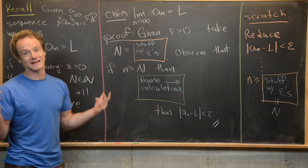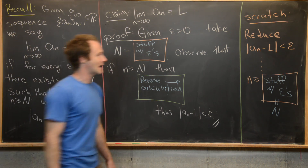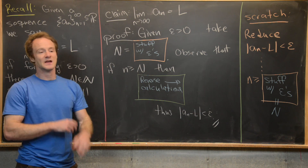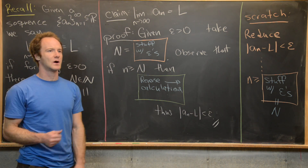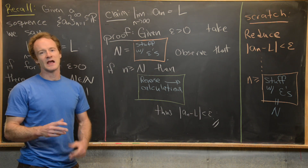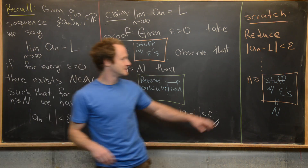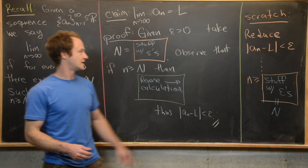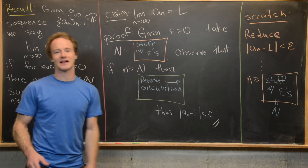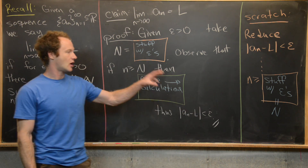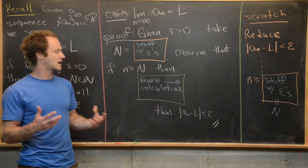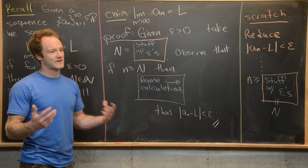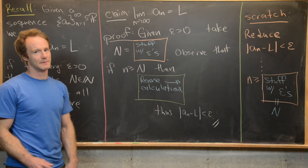The scratch work involves calculating your capital N value. You start with your goal inequality — the absolute value of a_n minus L is less than epsilon — then reduce that using known inequalities like the triangle inequality if necessary, and other standard arithmetic techniques, until you get down to n being bigger than or equal to some expression. All of that stuff on the right-hand side becomes your capital N, and it will generally depend on epsilon.